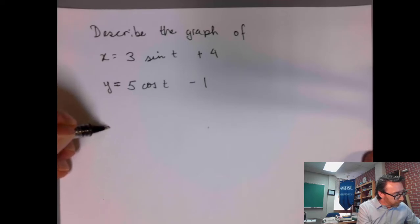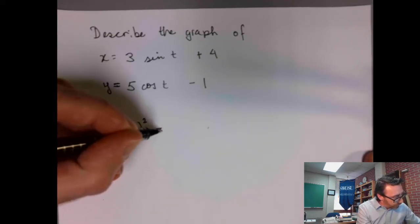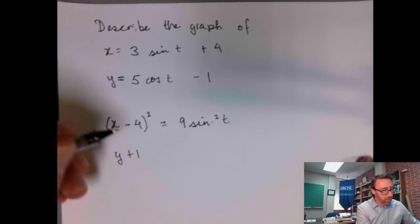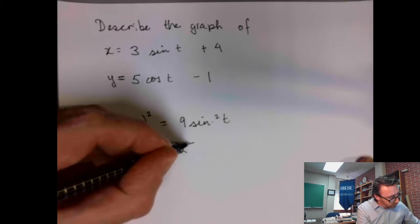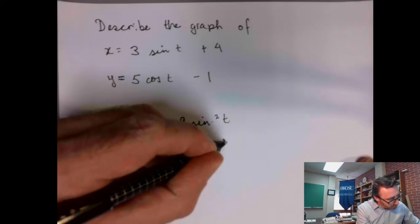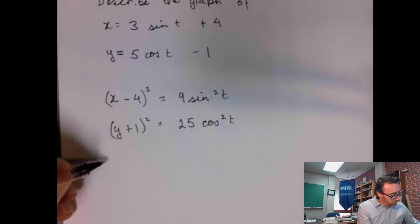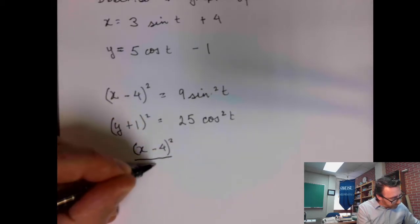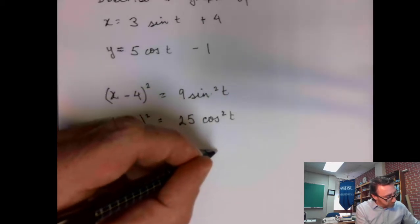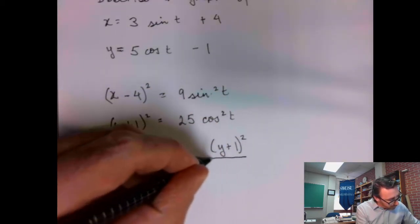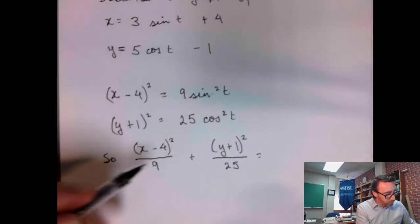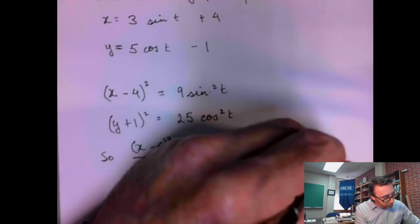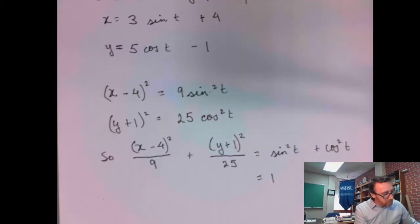So let me try this. What if I did x minus 4 and then squared it? If I did x minus 4, that gives me 9 sine squared t. And what if I did y plus 1 squared? That would give me 25 cosine squared t. So if I did x minus 4 quantity squared and then divided by 9, that would just give me sine squared. And then if I did y plus 1 squared over 25, that would give me cosine squared. So this is going to give me sine squared t. And that second term here, that's going to give me cosine squared t. So that gives me a 1.